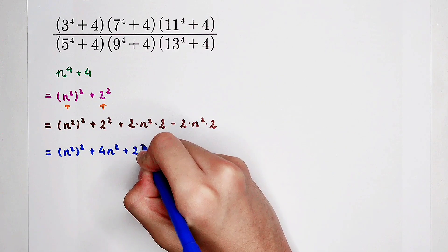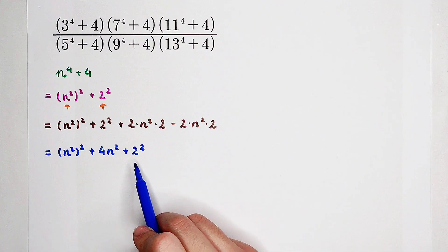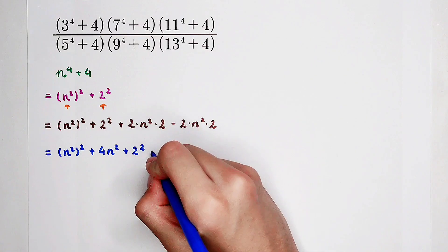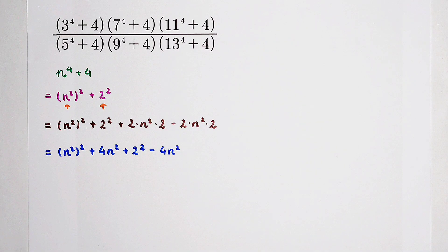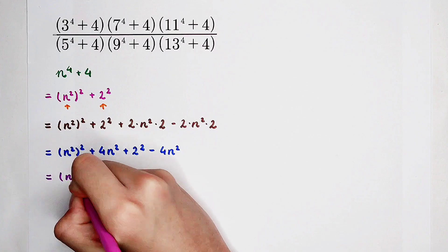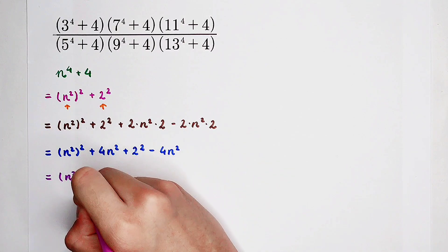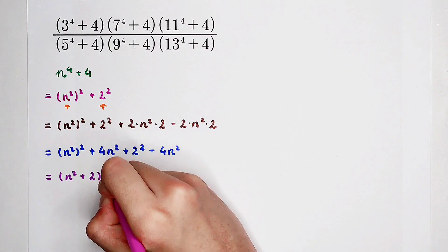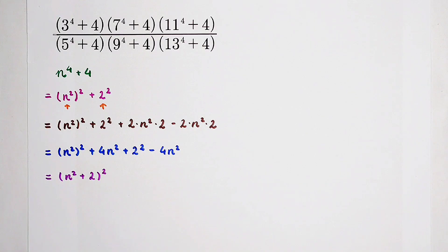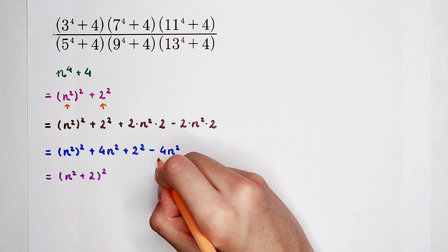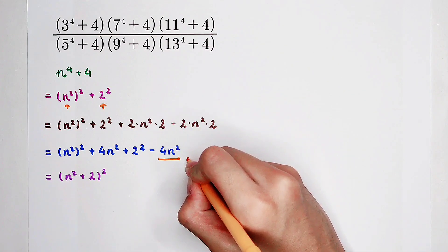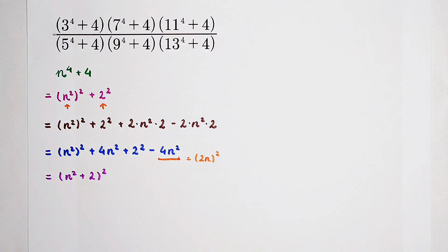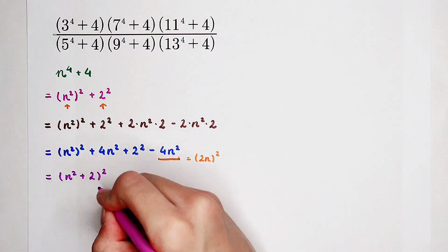2 times 2 is 4, so 4 times n squared, and then plus 2 squared. Of course, this is n squared plus 2, all squared. This is a squared term. And then minus — 2 times 2 is 4, times n squared. This part is n squared plus 2, all squared, minus 4 times n squared. This is 4 times n squared, which is equal to 2n all squared. We can deal with it successfully.